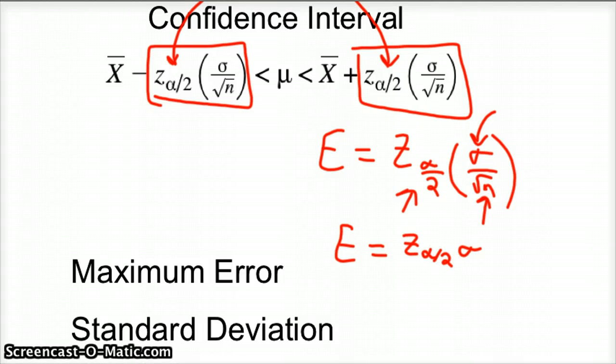I'm going to get rid of the parentheses. So E is equal to your z-score times your standard deviation divided by the square root of n.